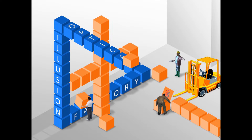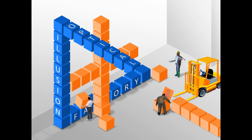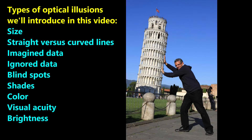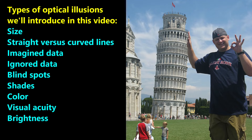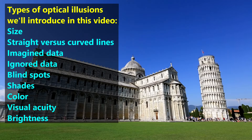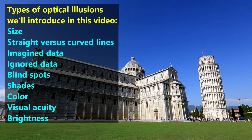In this video, we will give examples of optical illusions that make many people see things that are not real, such as those affecting: size, straight versus curved lines, imagined data, ignored data, blind spots, shades, color, visual acuity, and brightness.